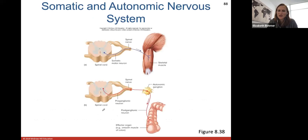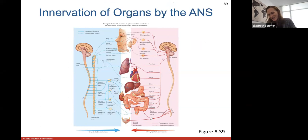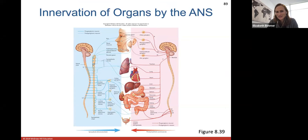We often call the parasympathetic division the craniosacral division because the cells arise by the cranium and the sacrum. The sympathetic division is the thoracolumbar division because preganglionic neuron cell bodies originate in the thoracic and lumbar segments of the spinal cord. The somatic nervous system goes to skeletal muscles voluntarily, while the autonomic nervous system goes to smooth muscles and things that are subconsciously controlled, like digestive organs. This final diagram shows innervation of organs by the autonomic nervous system — the sympathetic division in blue going through the sympathetic chain ganglia, and the parasympathetic division originating in the brainstem and sacral region.